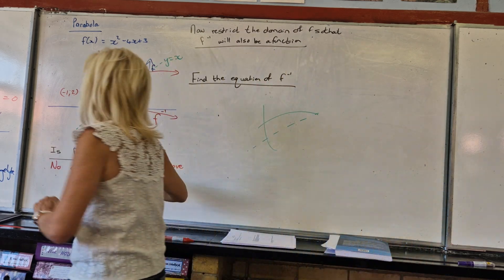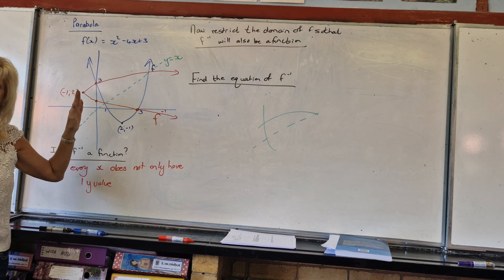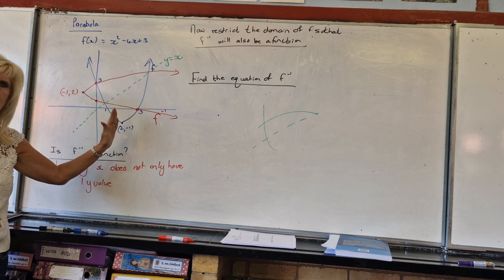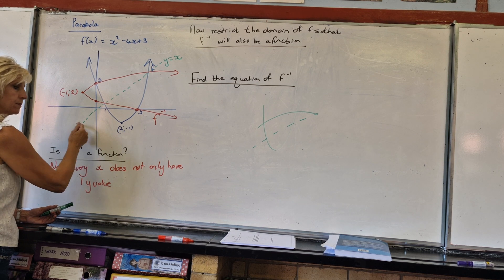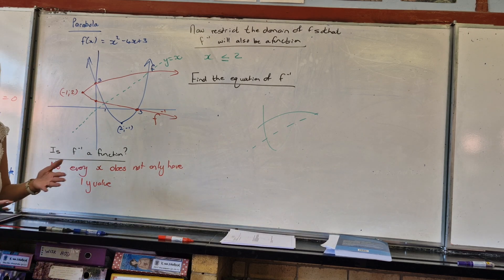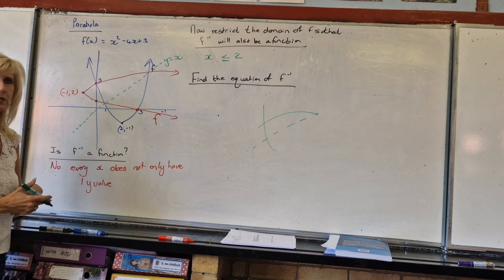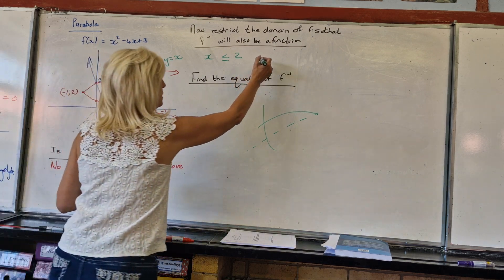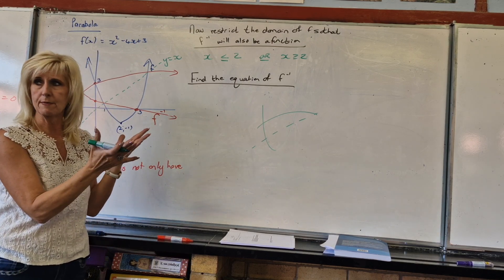If I want to cut off one of the legs, the domain of the original was x is an element of the real numbers. But if I restrict it around the turning point, I'm going to say cut off one leg. So x has to be less than or equal to 2. But couldn't I have just said let's cut off the left-hand side? So x must only be bigger than or equal to 2. You've got two options, and you can give me either one — it doesn't matter.